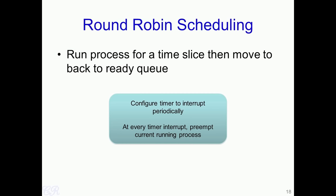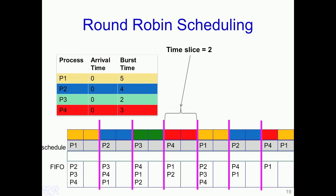Next, we look at the Round Robin (RR) scheduling algorithm. In Round Robin, a process runs for a time slice, and when the time slice completes, it is moved back to the ready queue. This is a preemptive scheduling algorithm. To achieve this, the timer in the system is configured to interrupt the CPU periodically, and at every timer interrupt the kernel preempts the current process and chooses another process to execute.